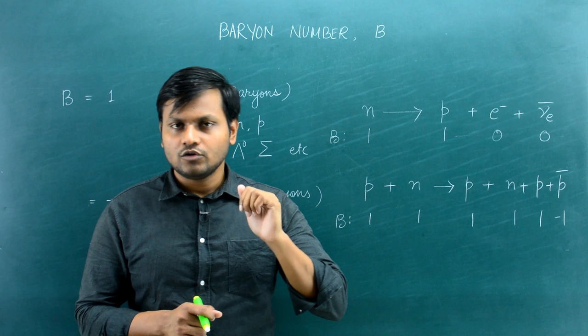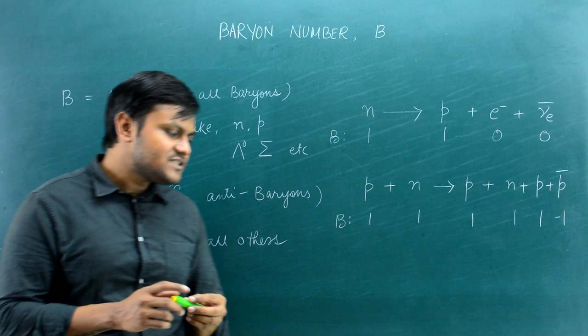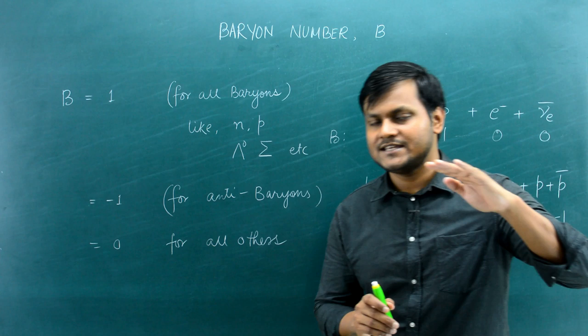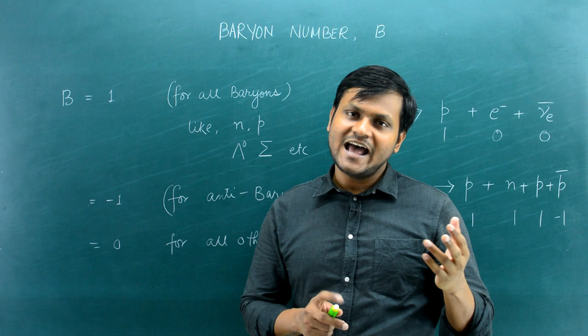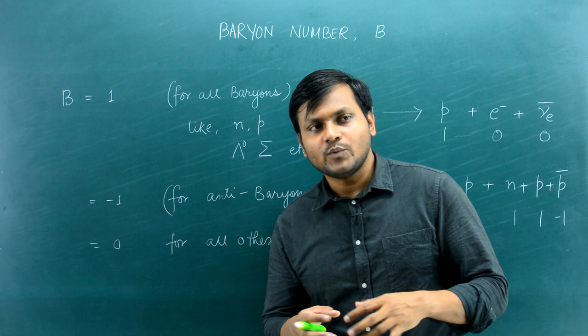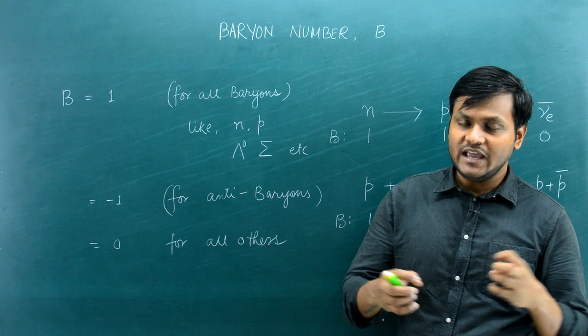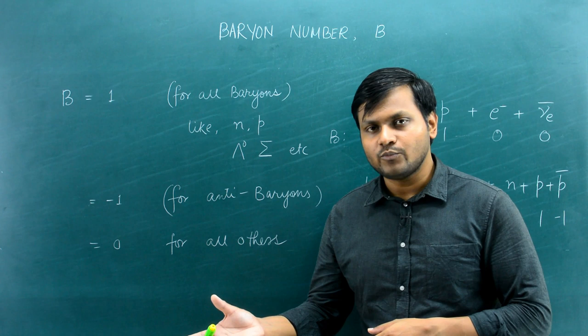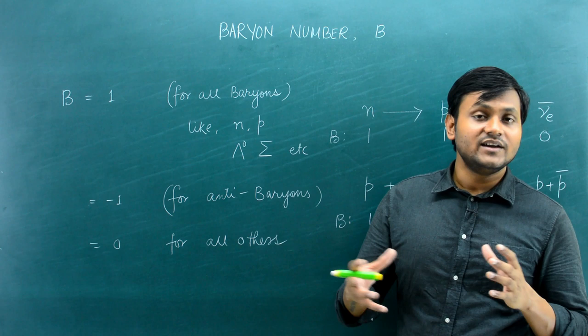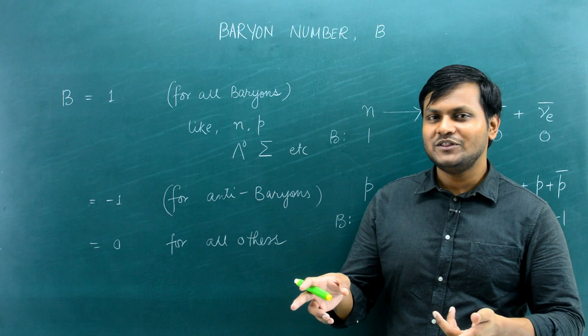Last but not least, there is the strangeness quantum number. This is called the strangeness quantum number because it is associated with particles that exhibit a strange behavior. Scientists in the 1950s–60s found a large number of particles that were created via strong or electromagnetic interaction but that decayed via weak interaction. These particles were named strange particles, and the associated quantum number is known as the strangeness quantum number.